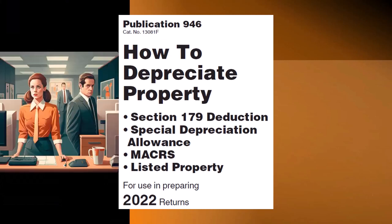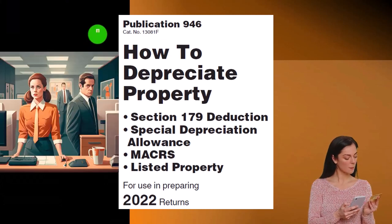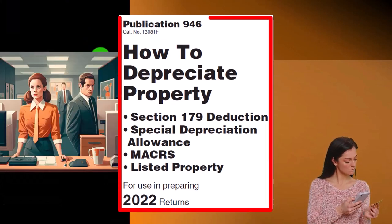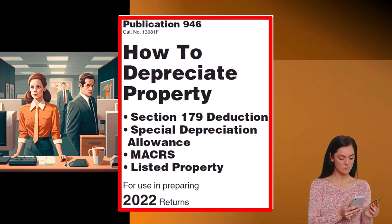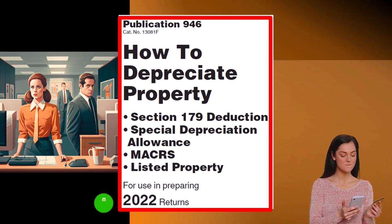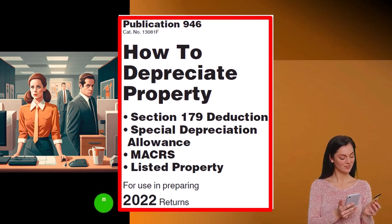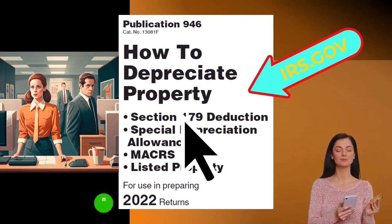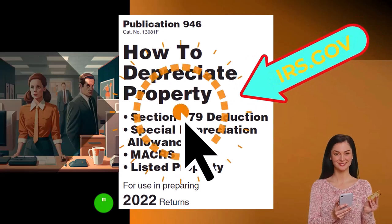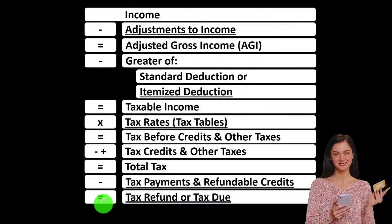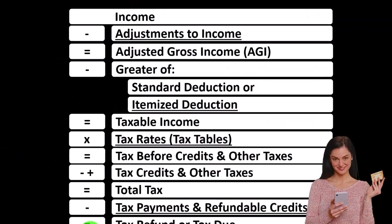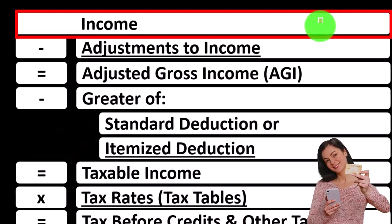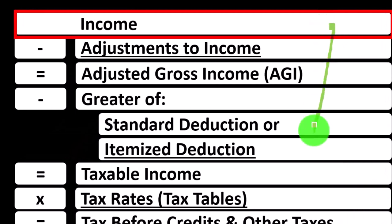Most of this information can be found at IRS Publication 946, 'How to Depreciate Property,' tax year 2022, available at irs.gov. We're focused on line one income in the income tax formula.